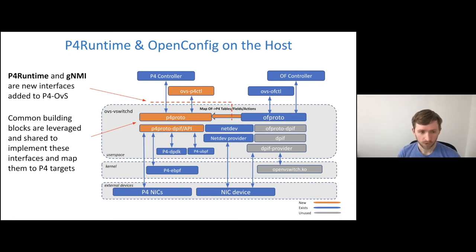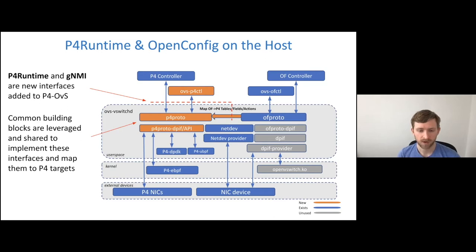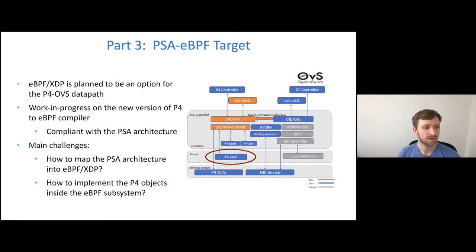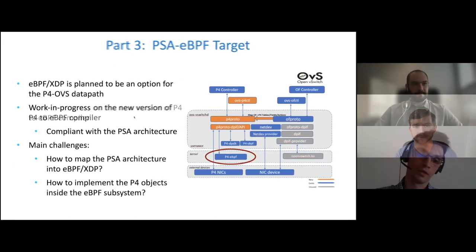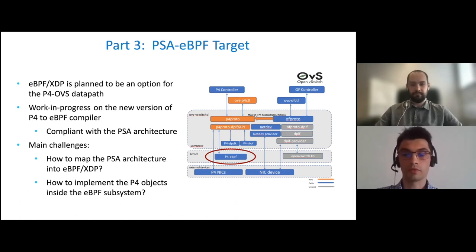Next up, Tomas and Mateus from ONF and Orange will talk about how we specifically map from the table API down to the eBPF target, and ultimately how the eBPF target can be implemented for P4OVS. I'm Mateusz from Orange, and we want to present a new P4 target: PSA eBPF. This is a kernel space target based on eBPF technology, which is also planned to be an option for the P4OVS data path.